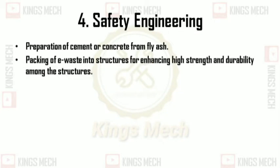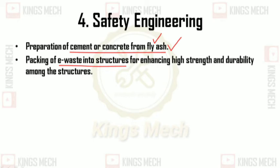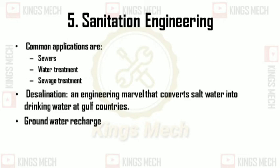Safety Engineering. Safety engineering applies in any field of safety, including radiation safety and preparation of cement. The safety of buildings is ensured through safety engineering. Packing of e-waste into structures — e-waste from electronic equipment and fly ash — adds strength and durability, so we can create stronger structures using cement in any field.